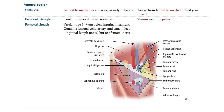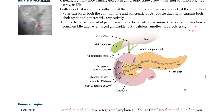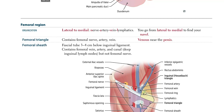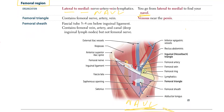We are going to be talking about the femoral region. In this femoral region, the organization from lateral to medial is: Nerve, Artery, Vein, and Lymphatics — NAVEL. That's the mnemonic for the organization from lateral to medial.